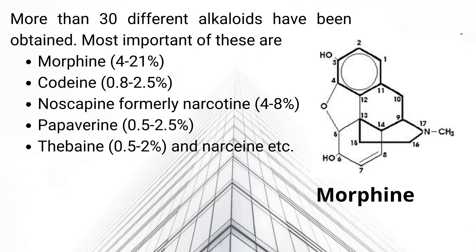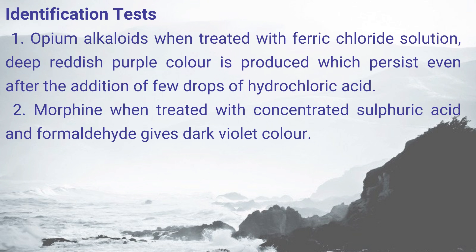More than 30 different opium alkaloids exist. Very important alkaloids include morphine, codeine, thebaine, papaverine and noscapine. Morphine contains a phenolic OH group (catechol type), which can be identified by treating with ferric chloride solution, giving a deep reddish-purple color. Also, morphine treated with concentrated sulfuric acid and formaldehyde gives a dark violet color — these are confirmatory tests for opium alkaloids.